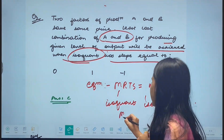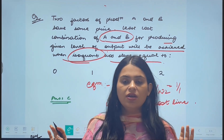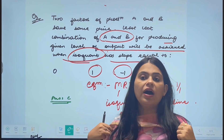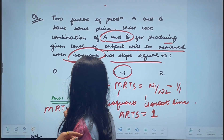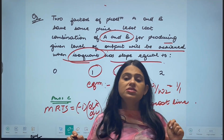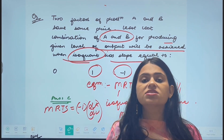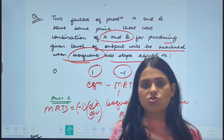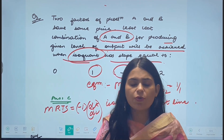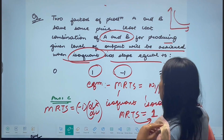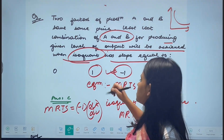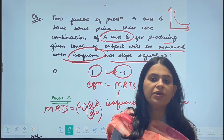From the equilibrium condition, MRTS equals 1. However, we need to be careful about the distinction between MRTS and the slope of the iso-quant. MRTS is always the absolute value of the iso-quant slope. The iso-quant itself is downward sloping, so its slope is negative. Therefore, the slope of the iso-quant equals negative MRTS, which gives us minus 1. The answer is minus 1, not positive 1.